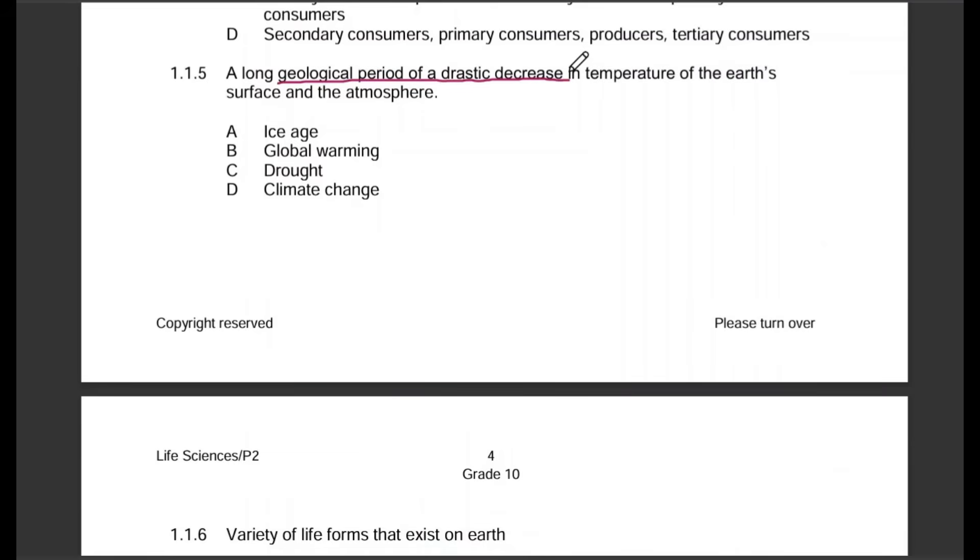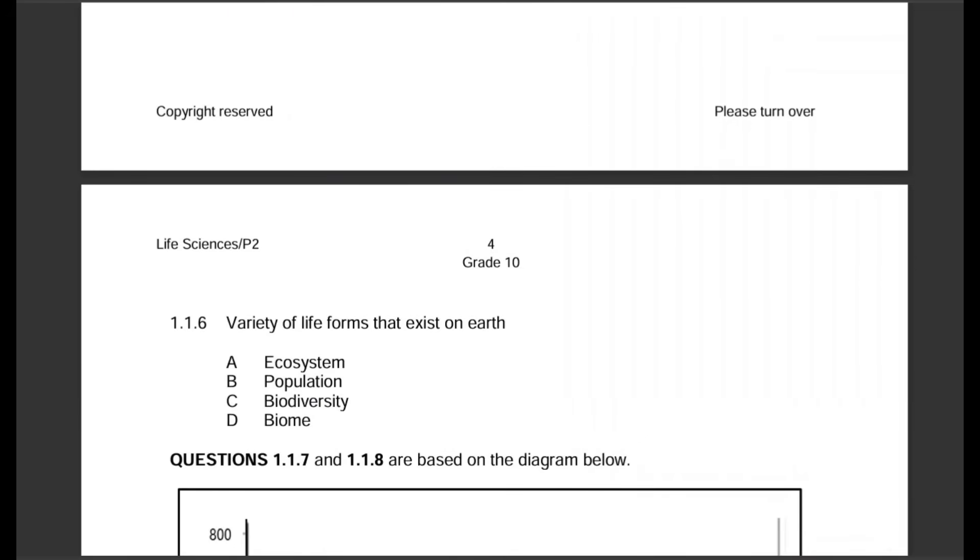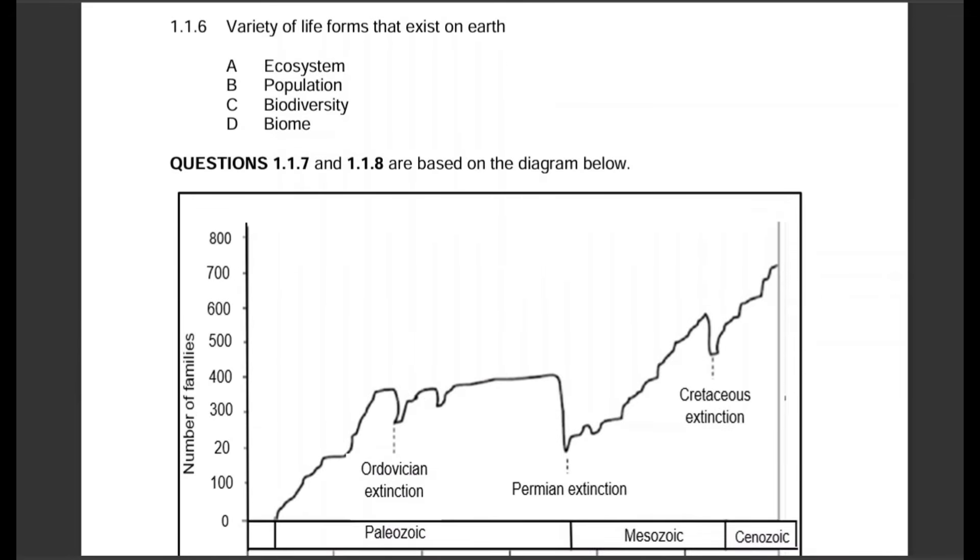Question 1.1.6: Variety of life forms that exist on earth. That'll definitely be C, biodiversity.